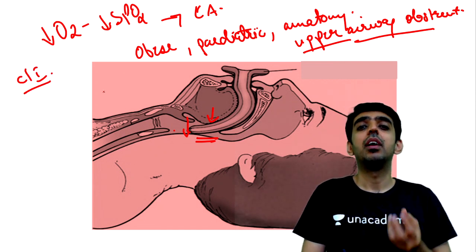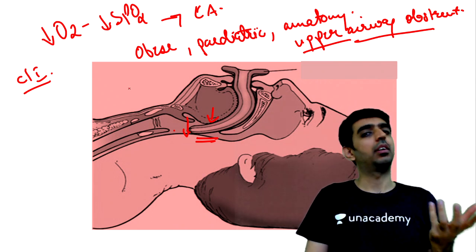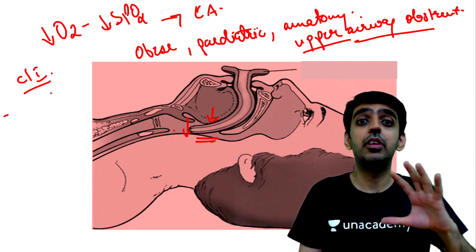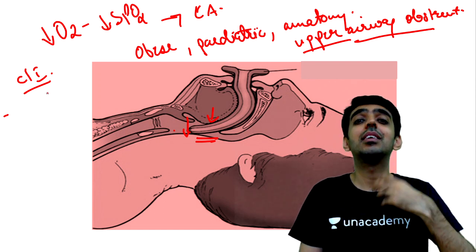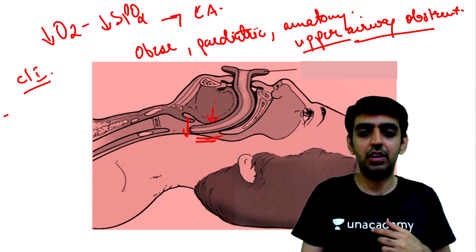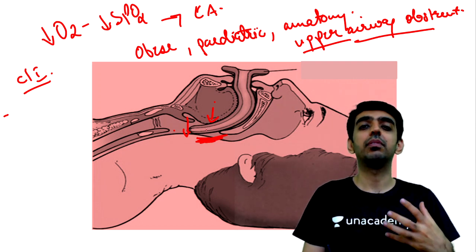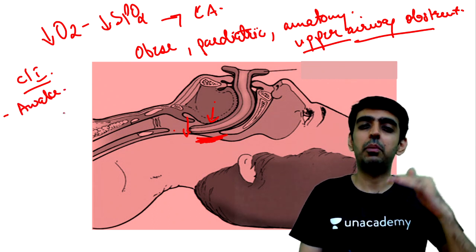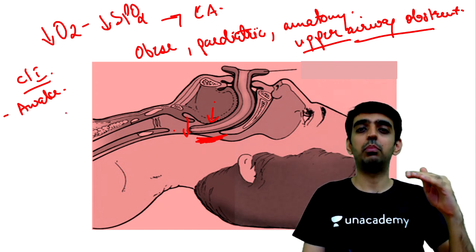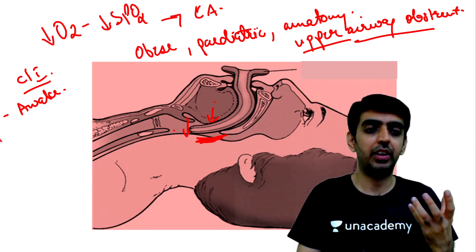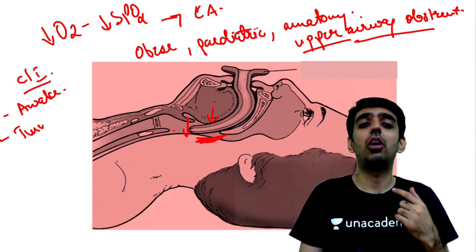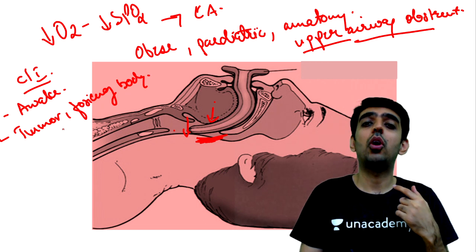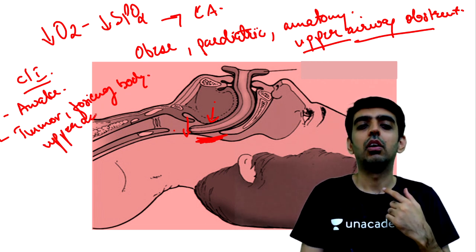Contraindications for the oropharyngeal airway include obstruction or malignancy of the oral cavity, and any foreign body in the upper airway. Importantly, if the patient is awake or lightly sedated, this device irritates the posterior pharyngeal wall, triggering gag reflexes, so the patient cannot tolerate it.